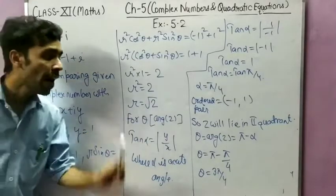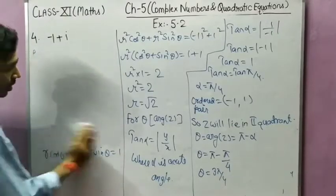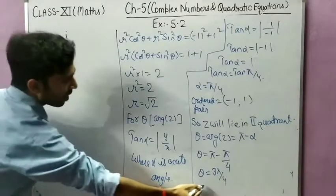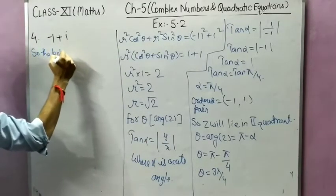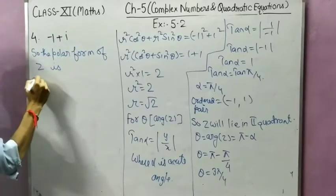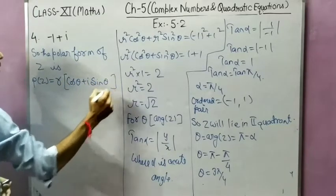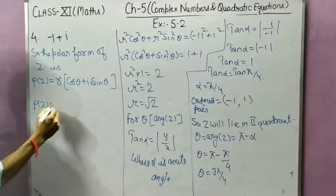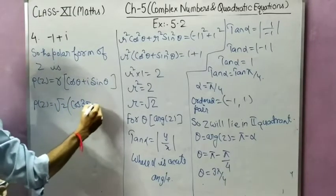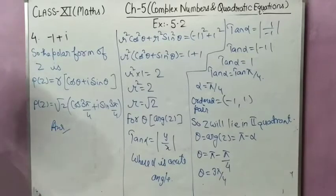We have calculated r equal to root 2 and theta equal to 3 pi by 4. Now we represent in polar form: p of z equals r times bracket cos theta plus i sin theta. Putting the values, p of z equals root 2 times bracket cos 3 pi by 4 plus i sin 3 pi by 4. This is the answer for question number 4. Please note it down.